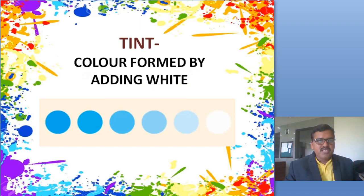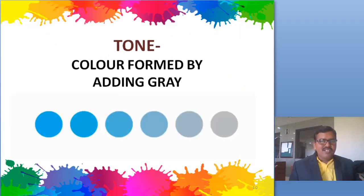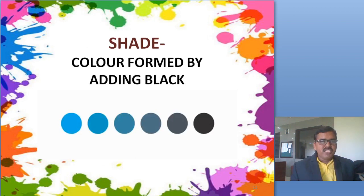What is a tint? Tint is a color formed by adding white. When white color is mixed into any color, the shade that is created is called a tint. Tone is a color formed by adding gray. When gray color is mixed into any color, the shade created is called a tone. Shade is a color formed by adding black. When black is mixed into any color, the shade created is called a shade.